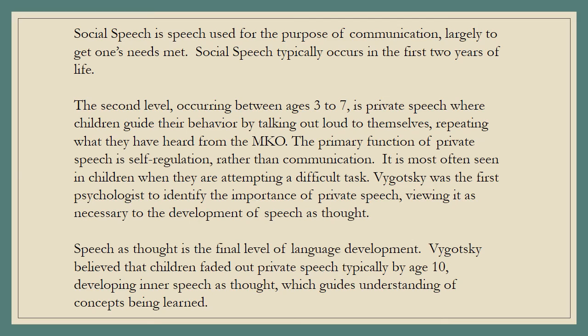The second level, occurring between ages three to seven, is private speech, where children guide their behavior by talking out loud to themselves, repeating what they have heard from the MKO. The primary function of private speech is self-regulation rather than communication. It is most often seen in children when they are attempting a difficult task.